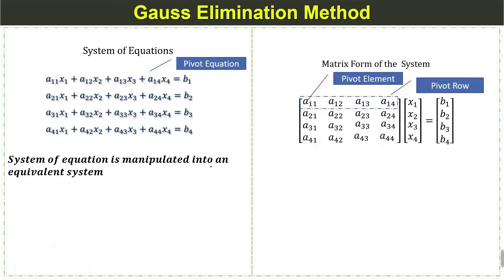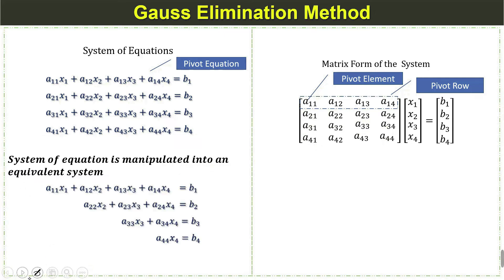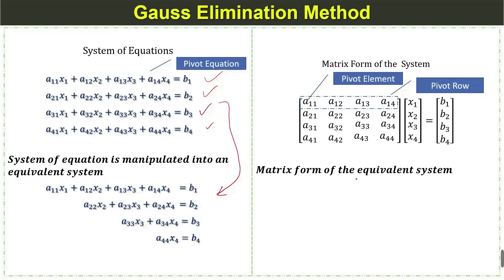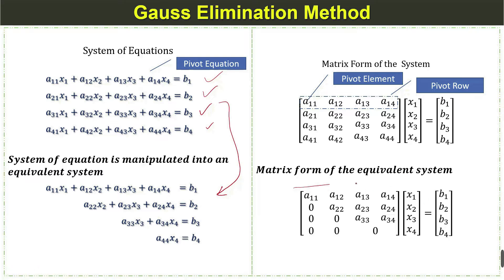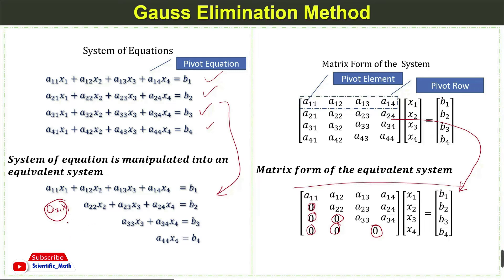The system of equations is manipulated into an equivalent system. We manipulate these equations into the Gauss elimination form. Similarly, the matrix form of the equivalent system is the upper triangular form, where all elements below the diagonal are eliminated.